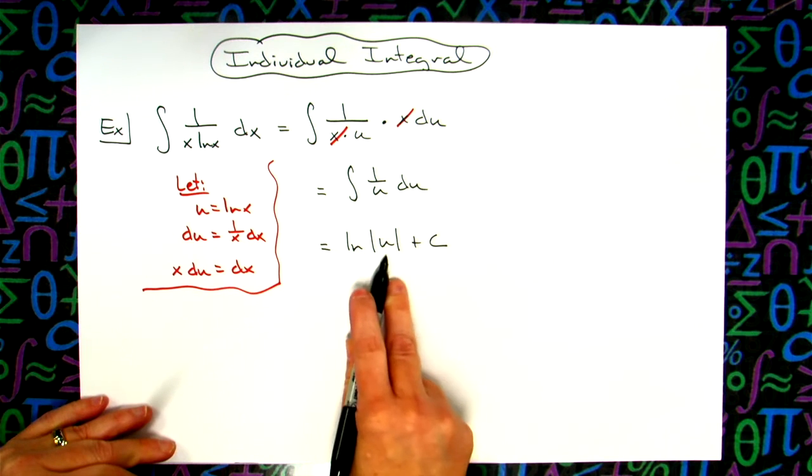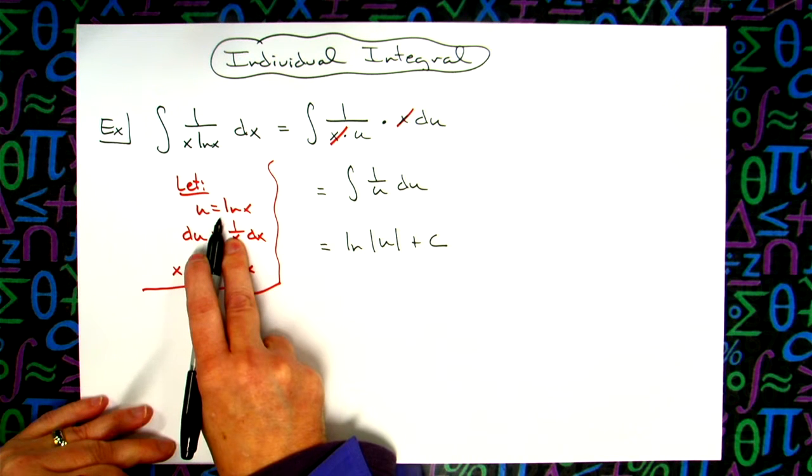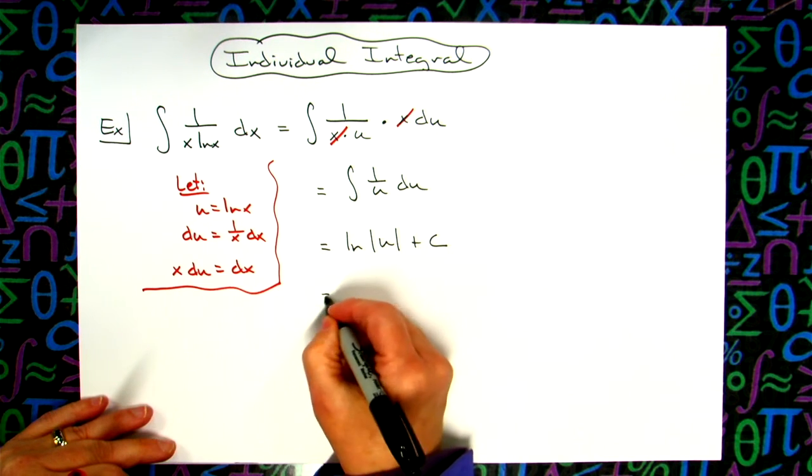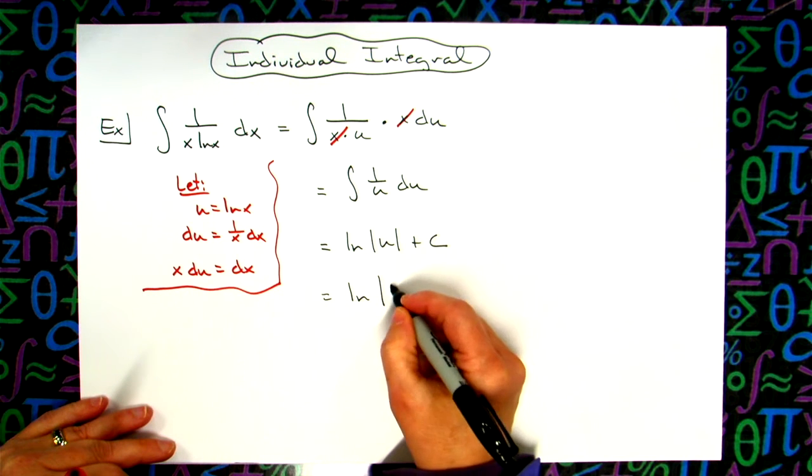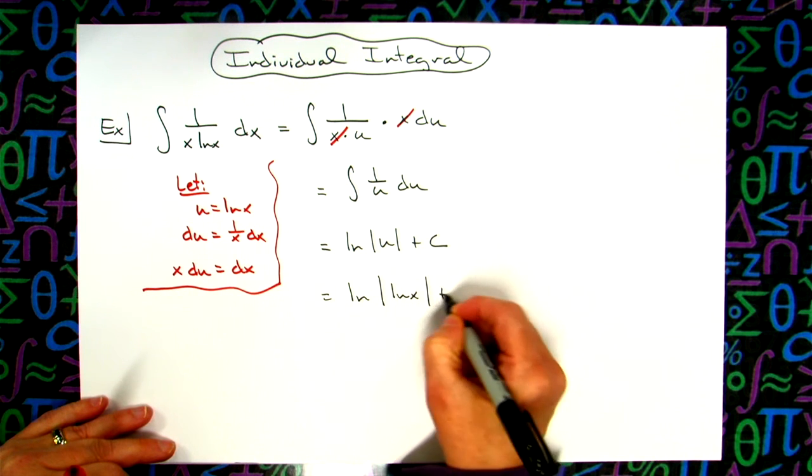And then for a final step, you'll take that u and you'll replace it with what you said it was equal to at the beginning. So we will have natural log absolute value natural log of x and then plus c.